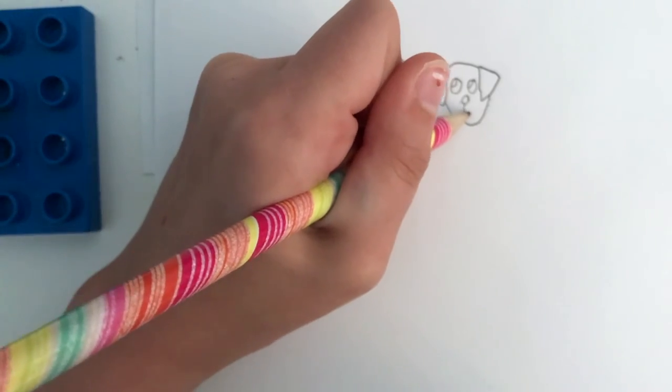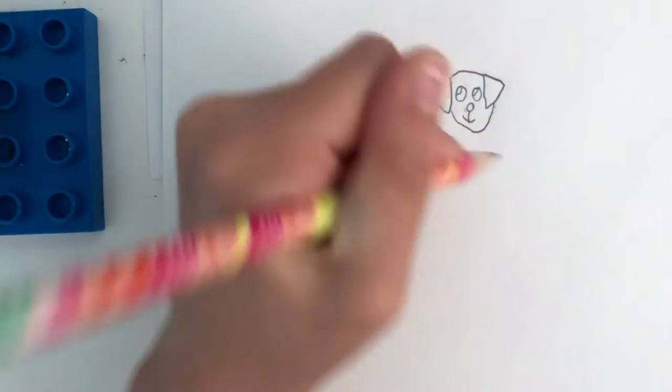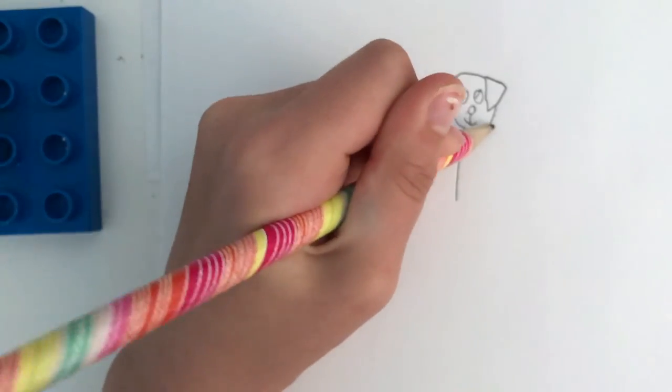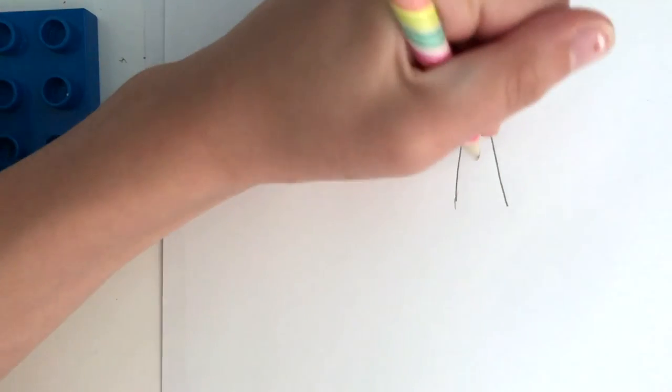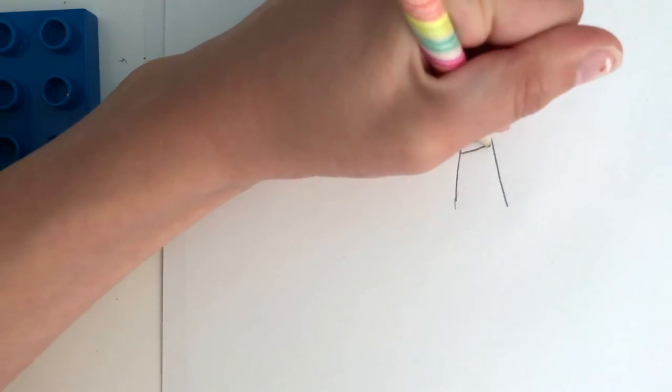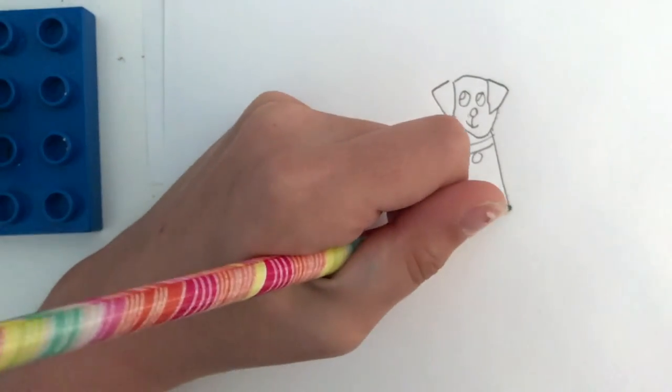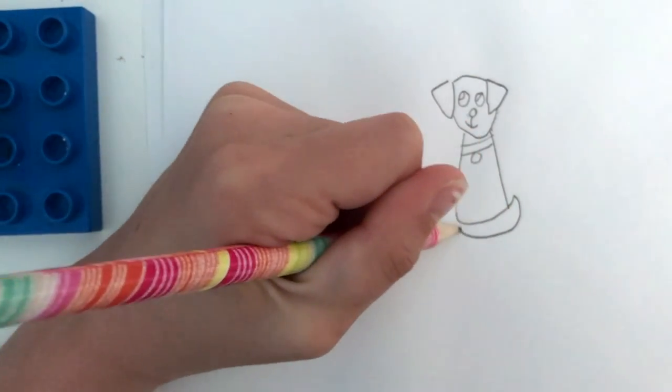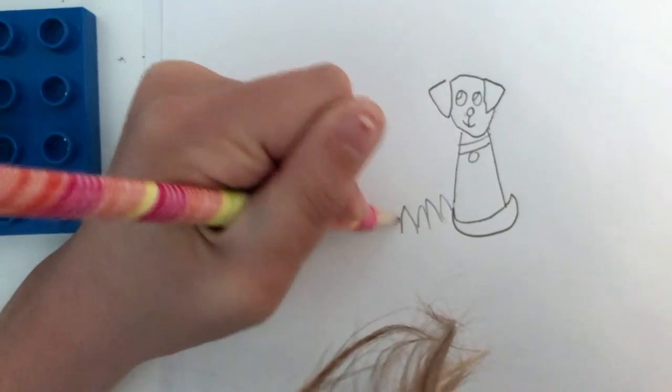So down, and then two lines that go across from each other, and then a little collar, and then a tail. And then let's add some grass.